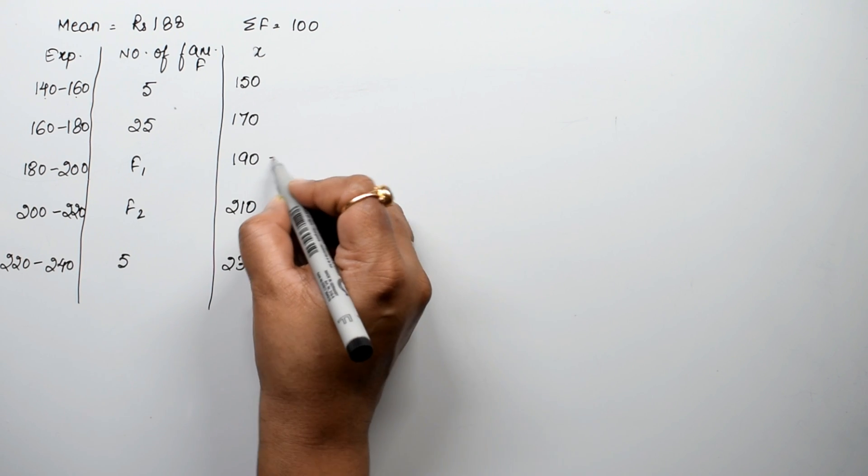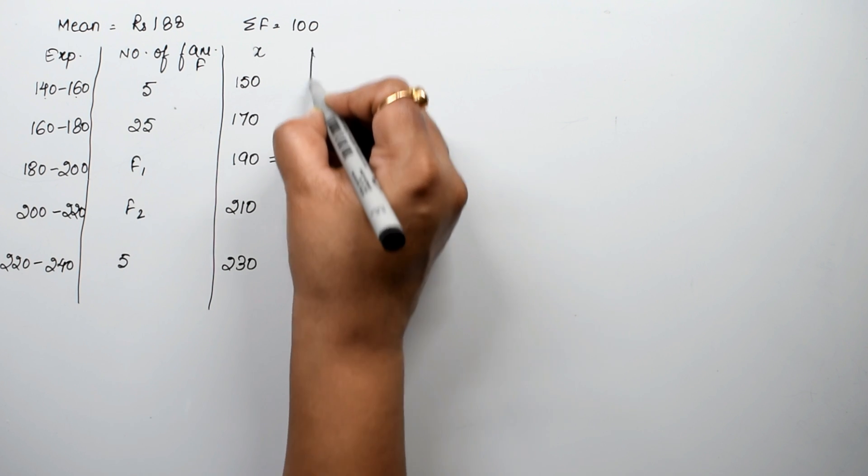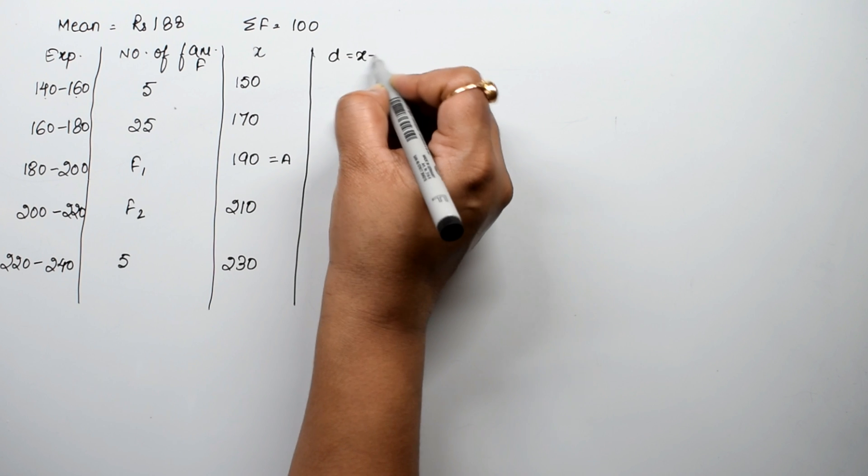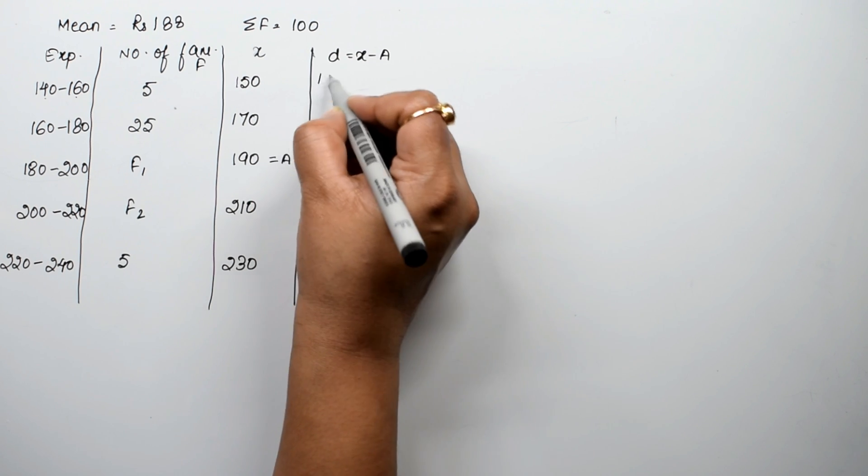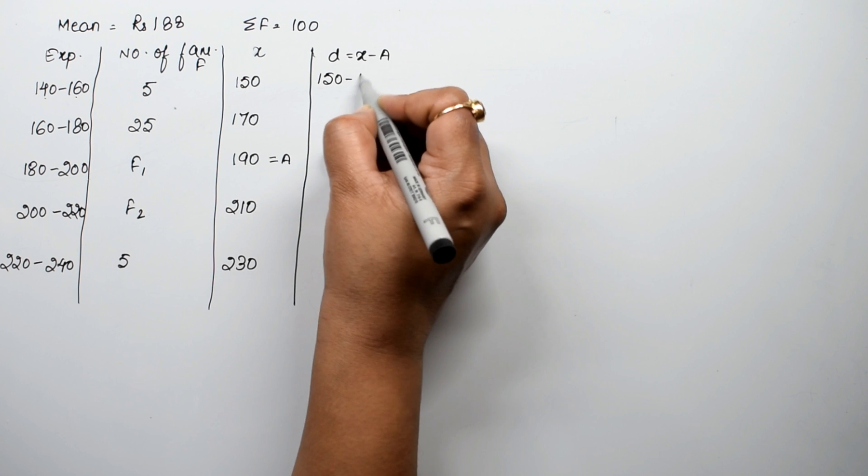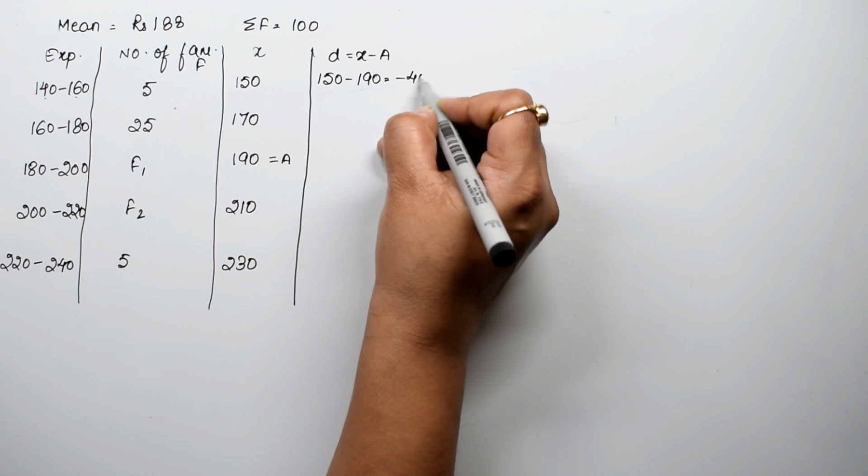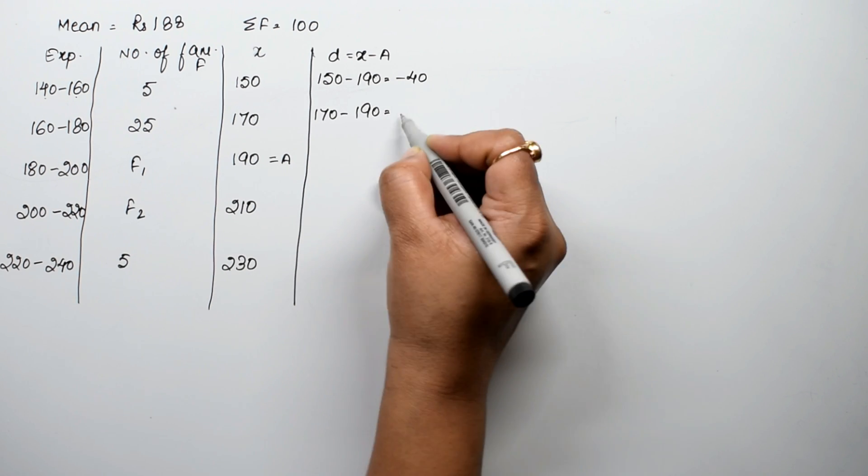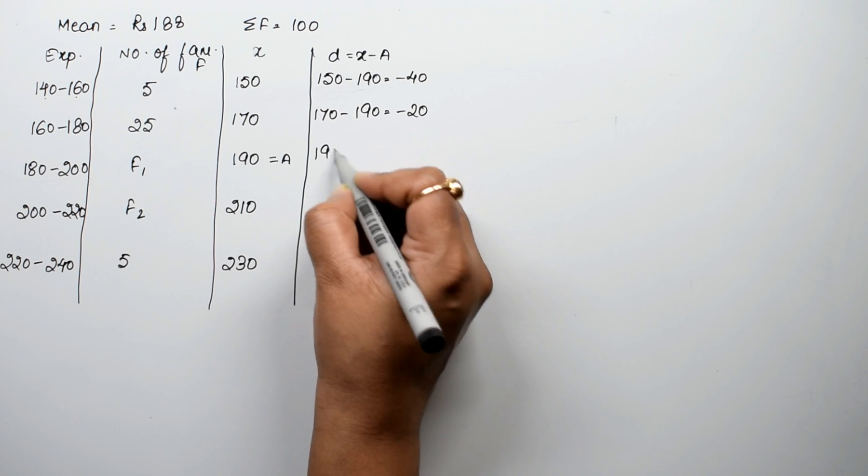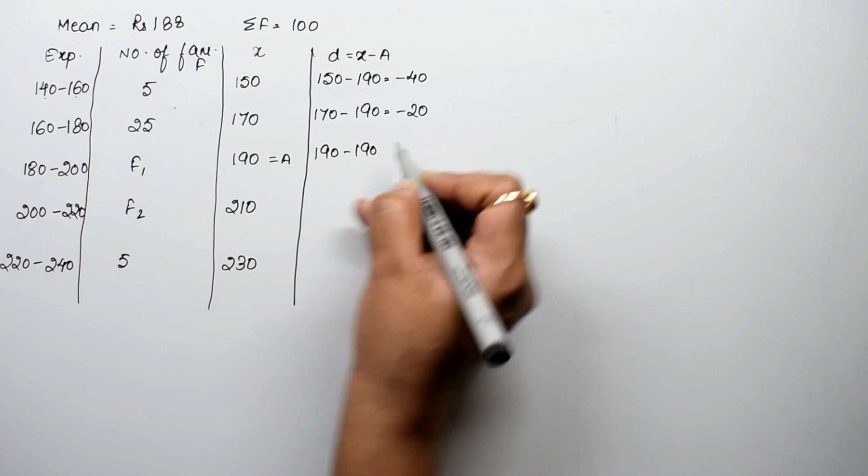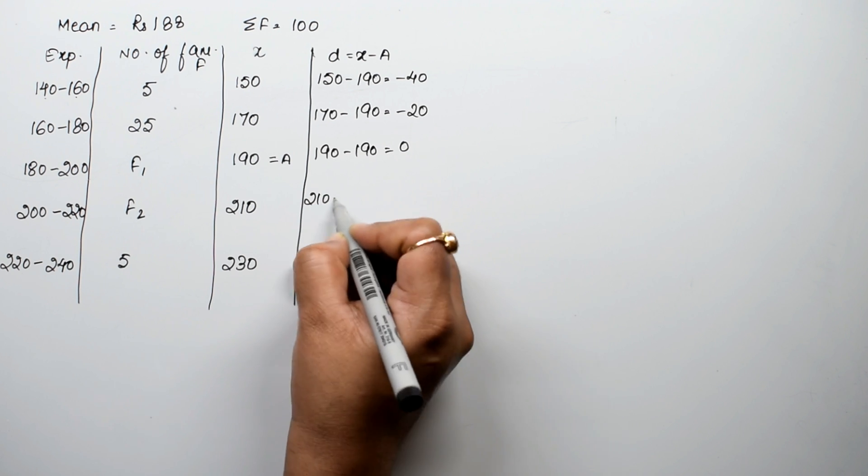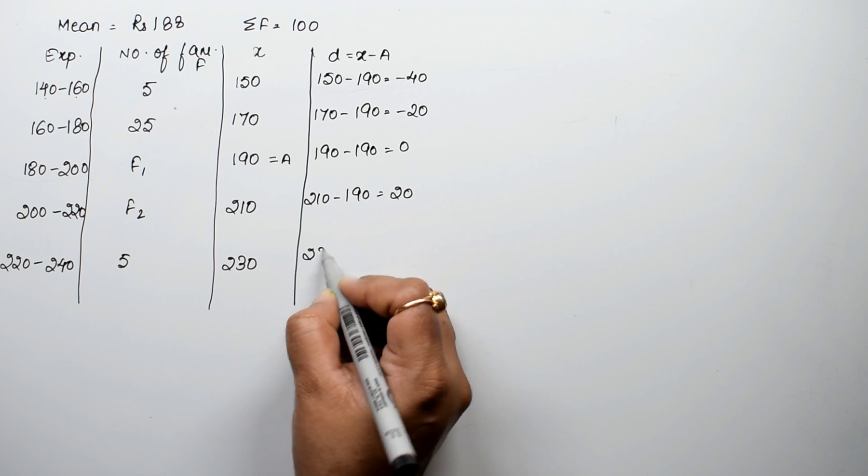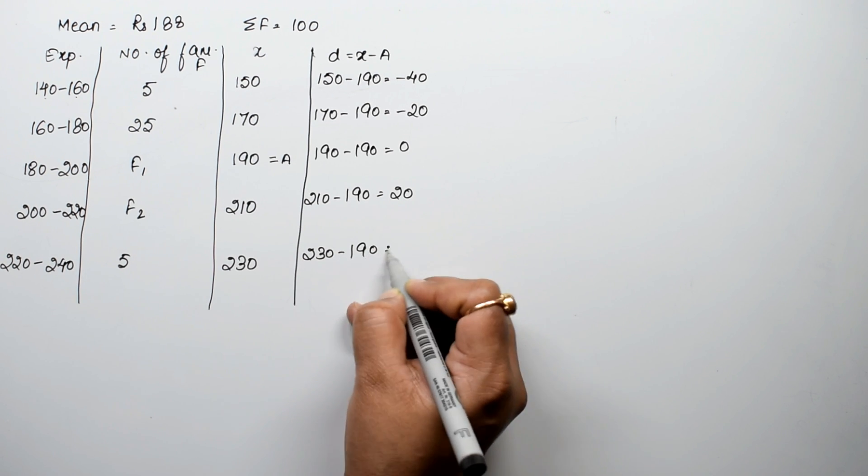Now I have assumed mean a as 190. Using the assumed mean method, we calculate x minus a. So 150 minus 190 equals minus 40, 170 minus 190 equals minus 20, 190 minus 190 equals 0, 210 minus 190 equals 20, and 230 minus 190 equals 40.